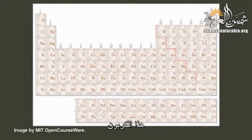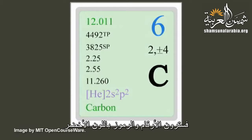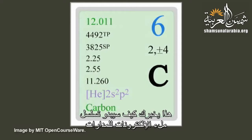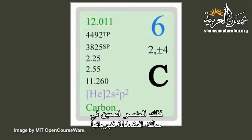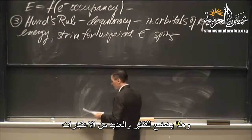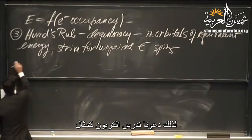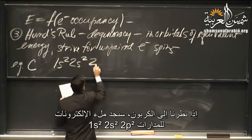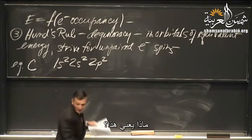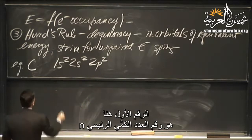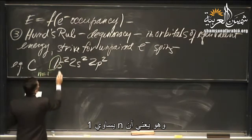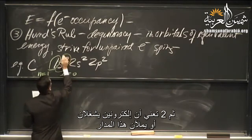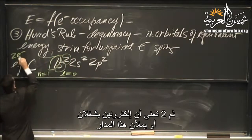Let's work through carbon as an example. If you look at carbon on the periodic table, the electronic configuration reads 1s², 2s², 2p². The first number is n, the letter (s) is the spectroscopist notation meaning l equals 0, and the superscript is the electron occupancy. So the 1s orbital has 2 electrons, the 2s orbital has 2 electrons, and the 2p orbital likewise has 2 electrons.